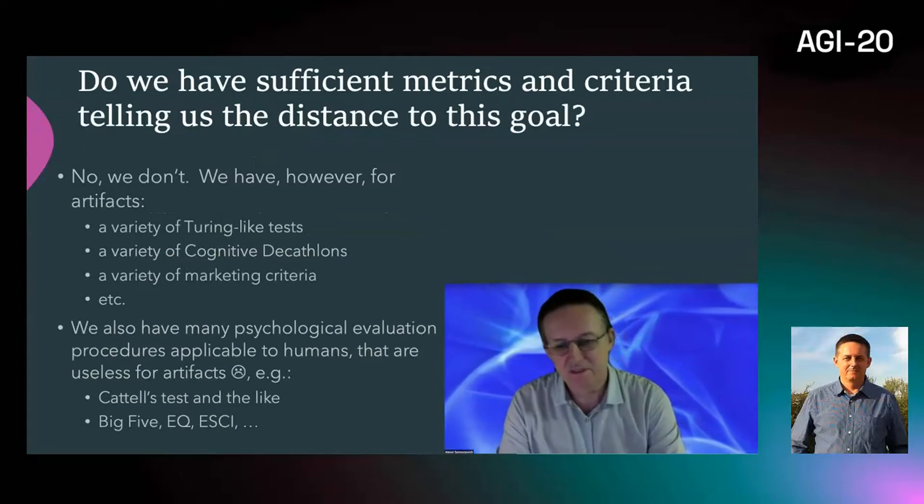Do we have those metrics and criteria telling us the distance to the goal? No, we don't. Right now we have a Turing-like test, we have cognitive decathlon, we have a variety of marketing criteria that take us down the hill. What we need is a set of human-like psychological tests and evaluations like the Big Five, the Cattell test, the emotional quotient.